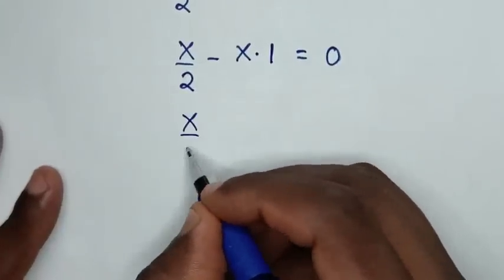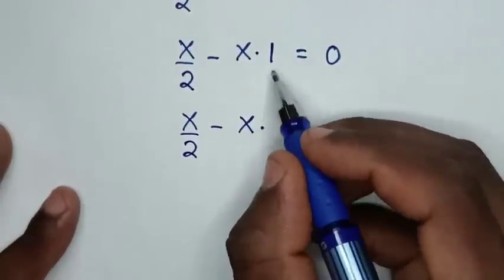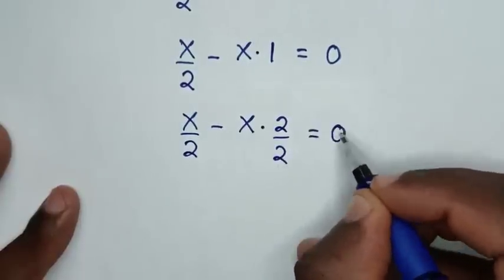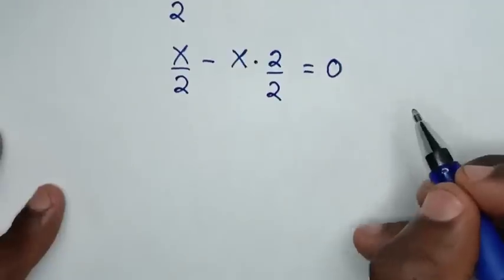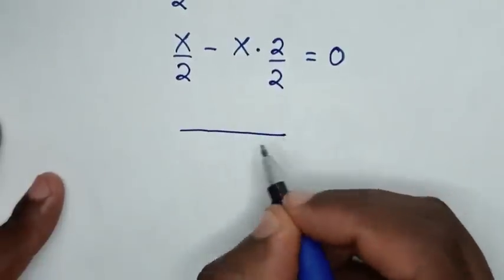our equation becomes x over 2 minus x times 1, which is the same as 2 over 2, equals 0. The common denominator of 2 and 2 is 2, so it will be over 2.